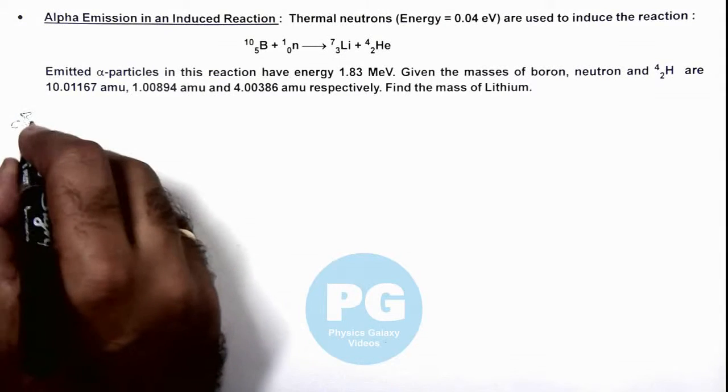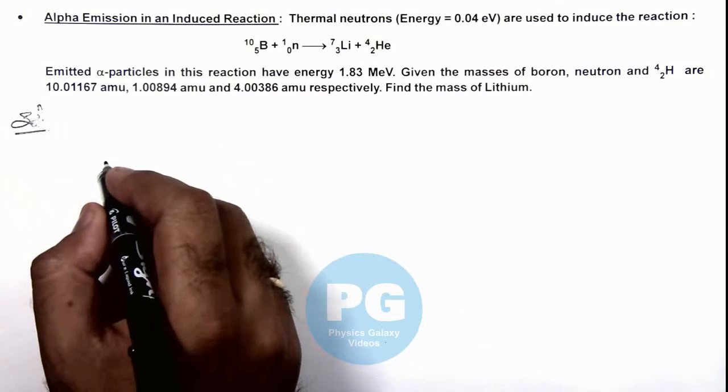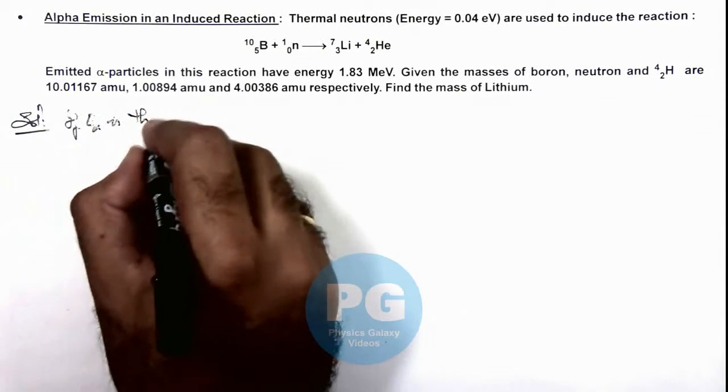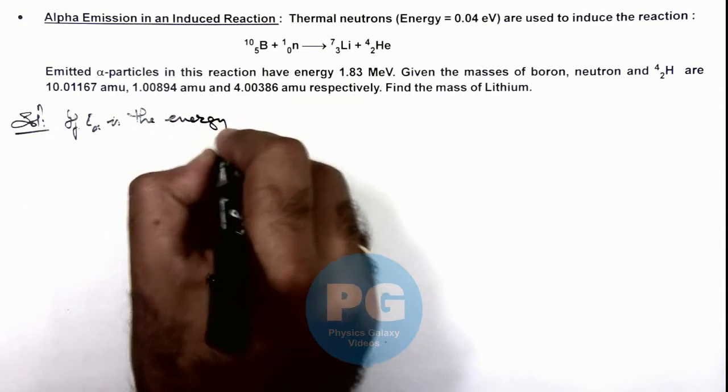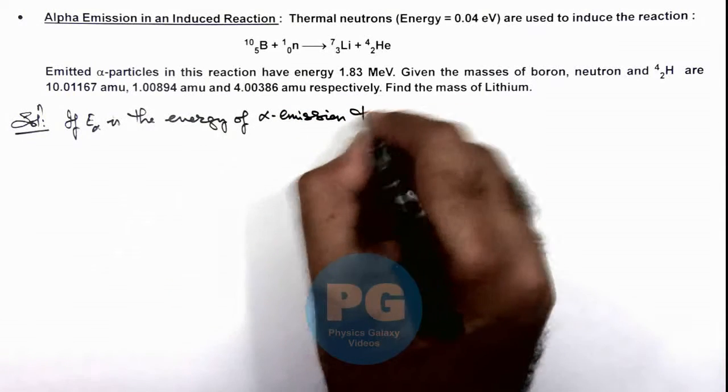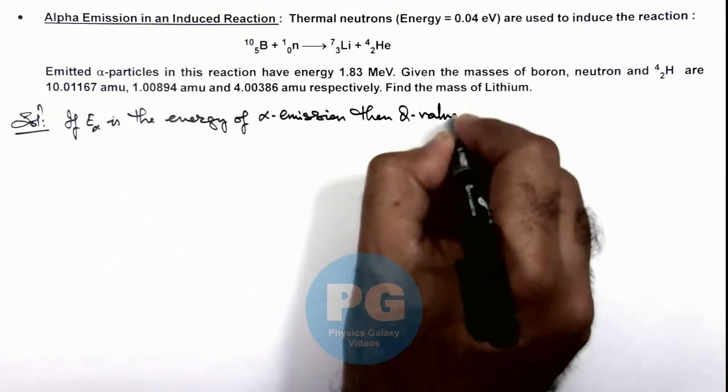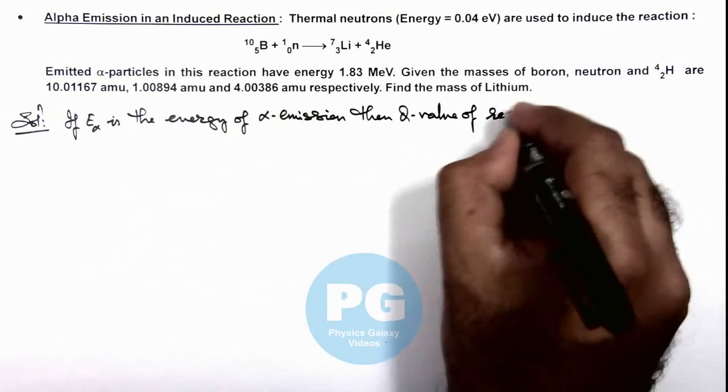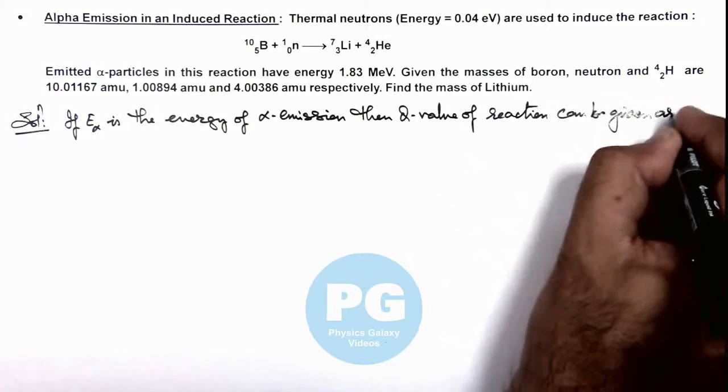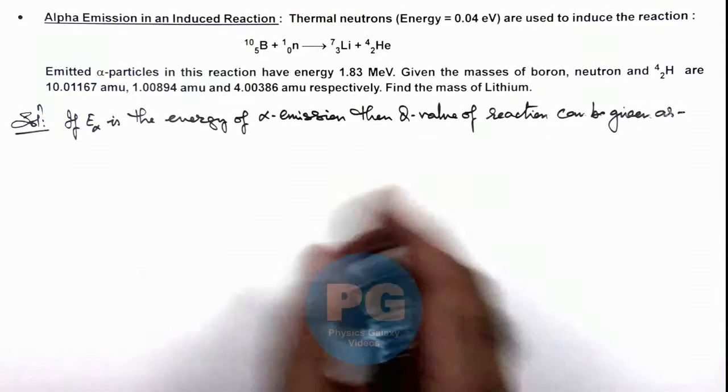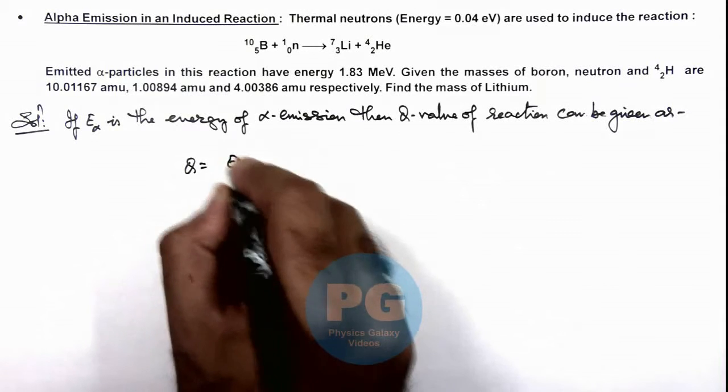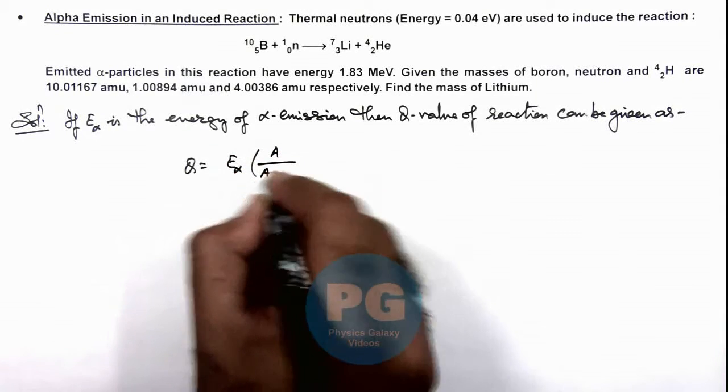Here in solution, we can first start with the Q value of reaction. Here we can write if E_alpha is the energy of alpha particle, or energy of alpha emission, then Q value of reaction can be given by the energy as this expression we have studied in concept videos by energy and momentum conservation. Q value we can write as E_alpha multiplied by A/(A-4).